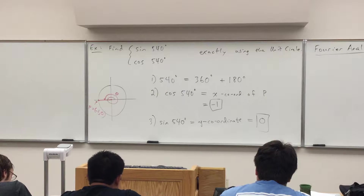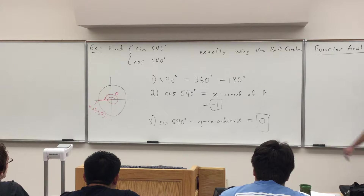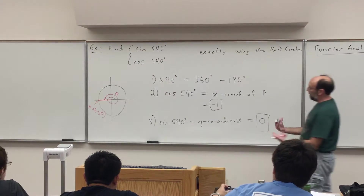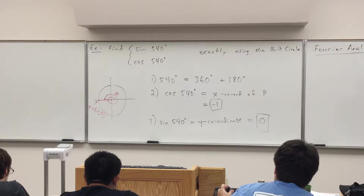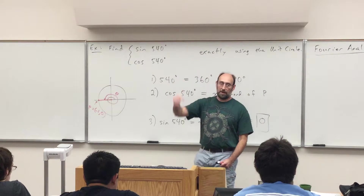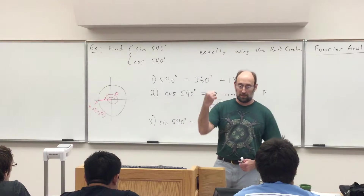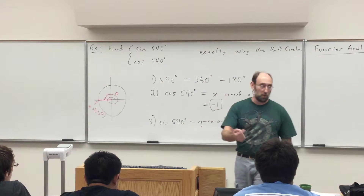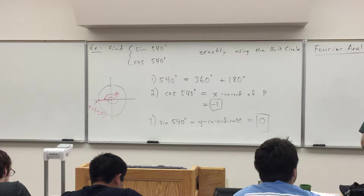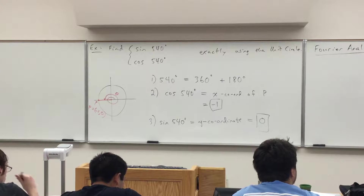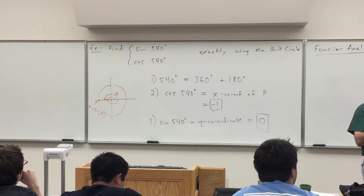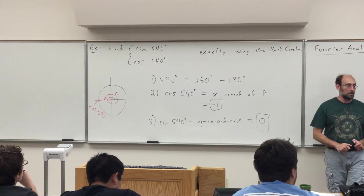Note that the cosine and sine — and all six trig functions — of 540 degrees return the same value as if I had used 180 degrees, because the terminal side ends at the same point. For any multiple of 360 plus 180 degrees, you're going to get the same trig function values.